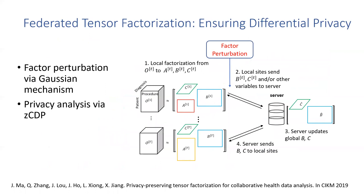Besides efficiency, privacy is another important challenge of federated computation. While the federated factorization we have discussed so far offers significant privacy improvements over integrating the data, there's no formal guarantee of privacy, since the intermediate results shared with the coordinating server may still reveal information.